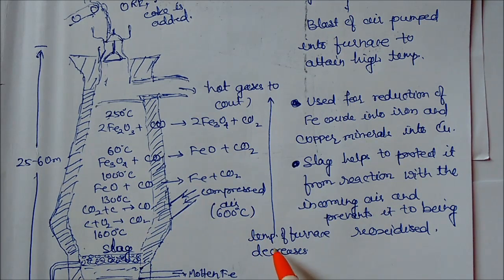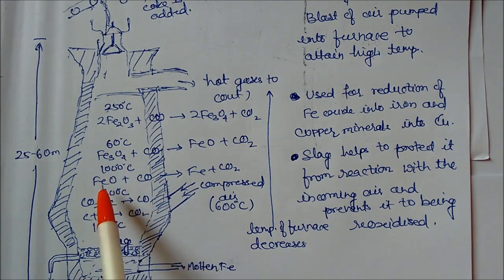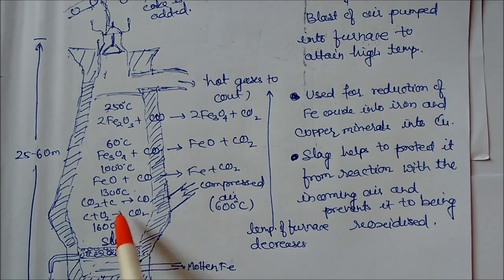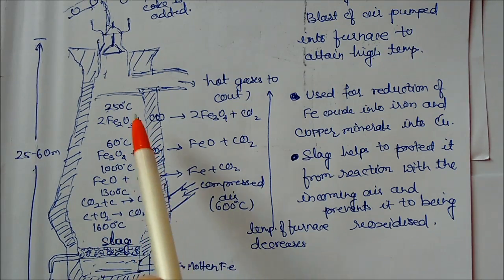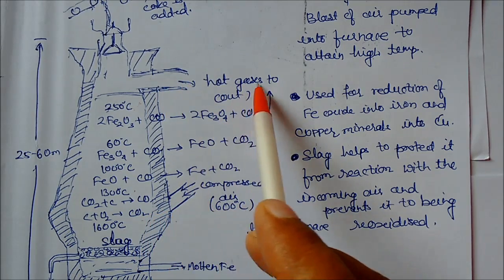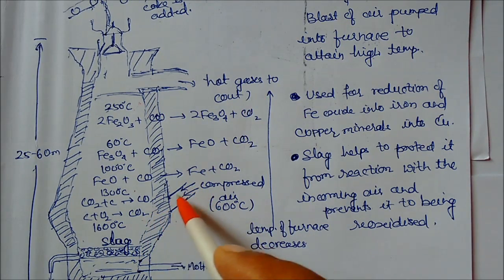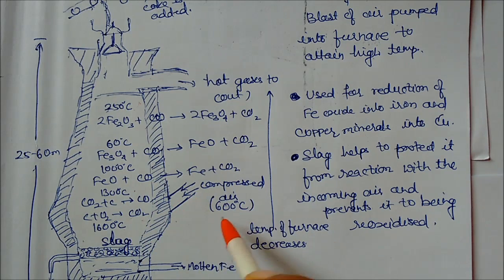We can see different types of temperatures. This temperature is in decreasing order: 250, then 600, then 1000, then 1300, 1600. The temperature is increasing downward, so bottom temperature is high, here temperature is lower. This is space where hot gases come out and this is space where compressed air is passed in.